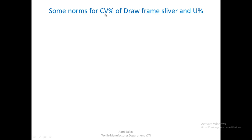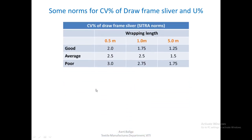We should know what level of CV or U percentage is considered good, average, or poor at the drawframe. There are CITRA norms for CV percentage of drawframe sliver. For a wrapping length of 0.5 meters — that is, slivers of half-meter cut length — a CV percentage of 2% is considered good, 2.5% is average, and 3% is poor.